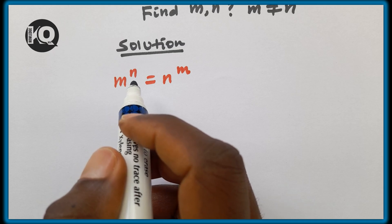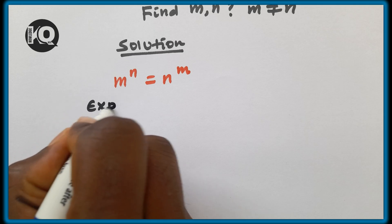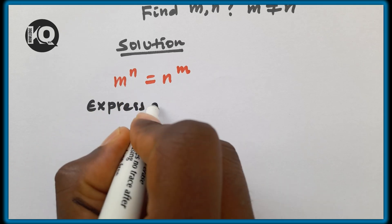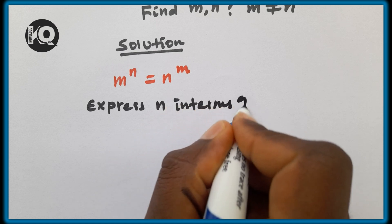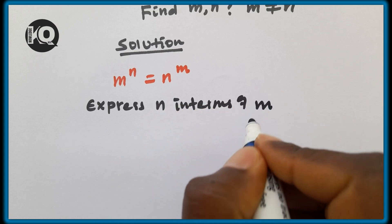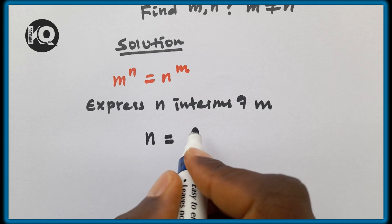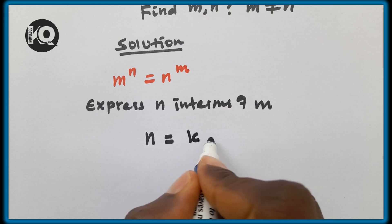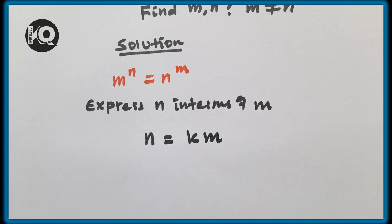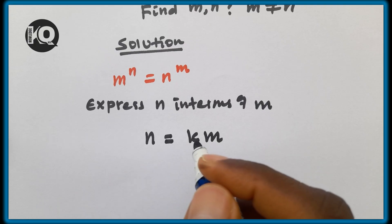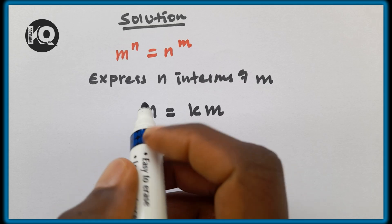Let's express n in terms of m. We say n equals k times m, where k is a constant.